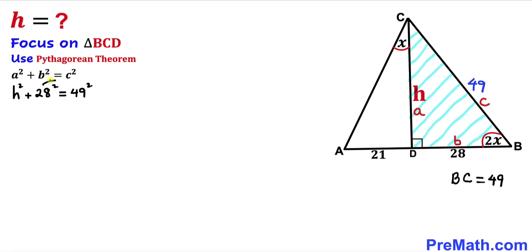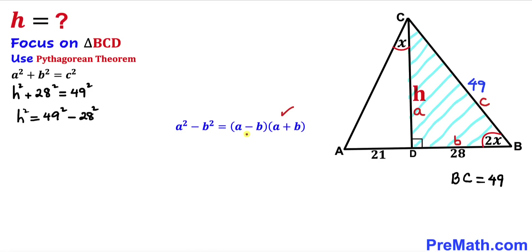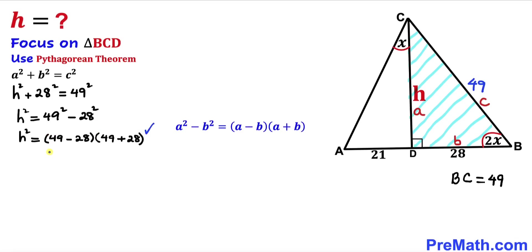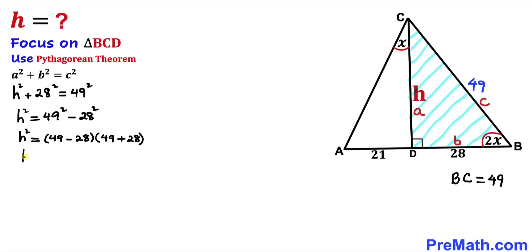Now let's move 28 squared to the right hand side: H squared equals 49 squared minus 28 squared. Let's recall the difference of squares identity: A squared minus B squared equals (A minus B)(A plus B). So this becomes (49 minus 28)(49 plus 28), which is 21 times 77. Therefore H squared equals 21 times 77.